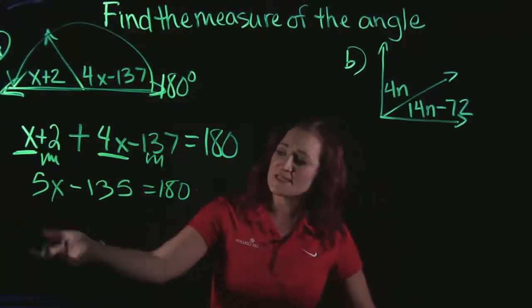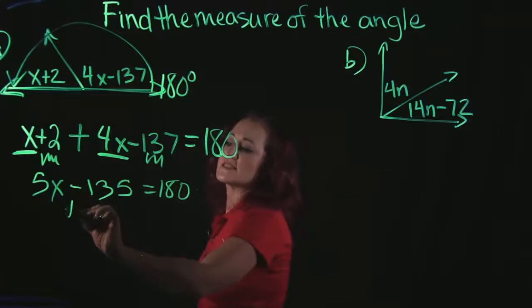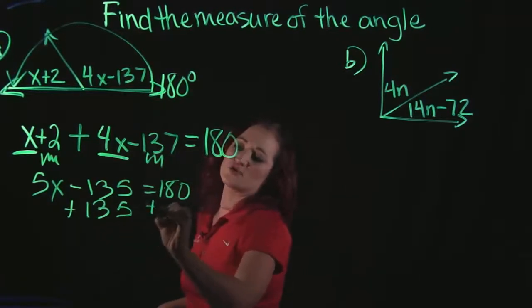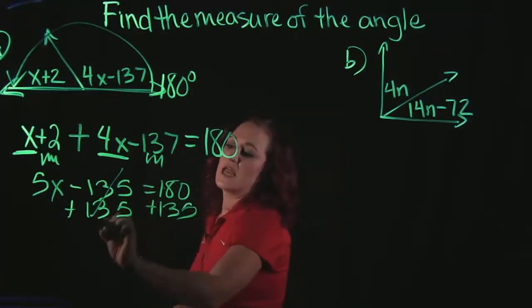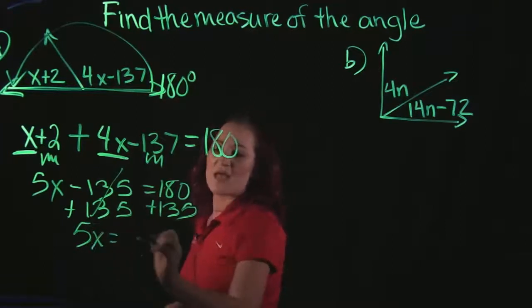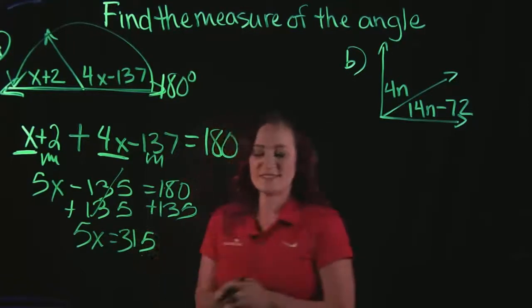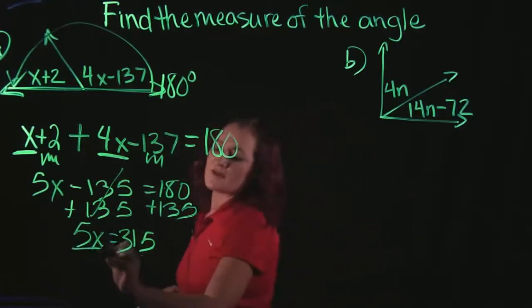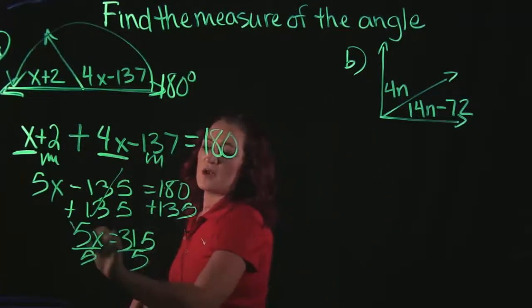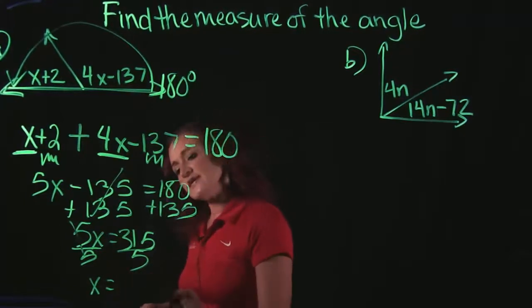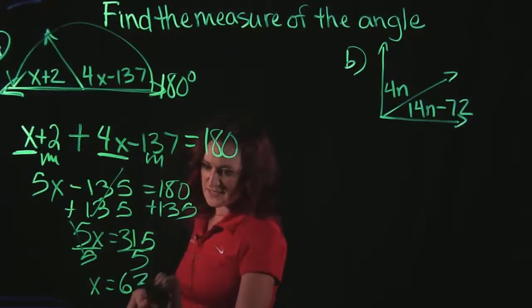Since my variable is on the left hand side, we're going to move our number to the right hand side. So let's add 135 to both sides. And when we do that, we get that 5x is equal to 315. I need to divide both sides by 5. And when I do so, we get that x is equal to 63.